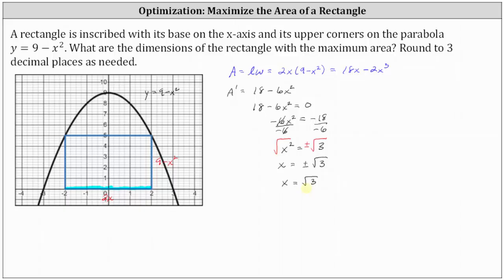Now we should verify that we have a maximum at x equals square root of 3, not a minimum. We can do this two ways: using the first derivative test or the second derivative test. The first derivative test checks that A changes from increasing to decreasing at x equals square root of 3. For this example, let's use the second derivative test and test the concavity.